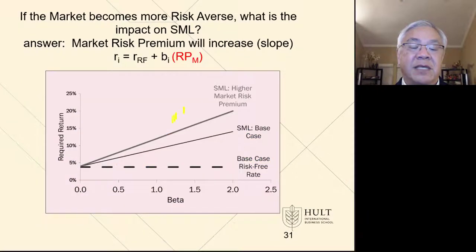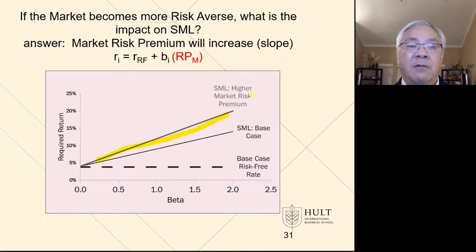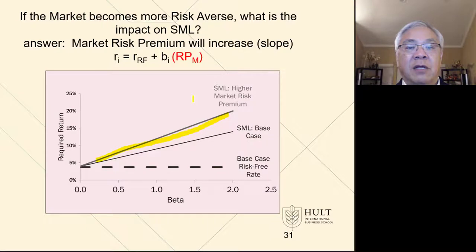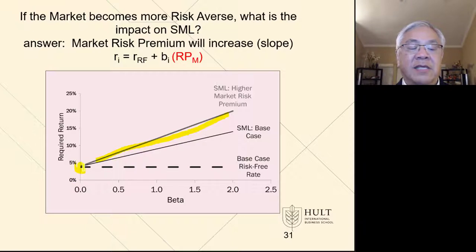The next impact is what happens if the market gets a little jittery. At that point, the slope rises — we need a higher premium for taking on risk. That premium is the slope of the line. Therefore, if the market gets risk-averse, it demands a higher return for taking risk, and the slope increases. We're locking down the intercept, meaning the risk-free rate is the same. However, because the market wants more return, the slope rises, and that's why the line has this steeper shape.